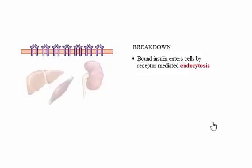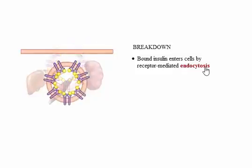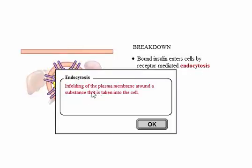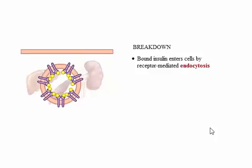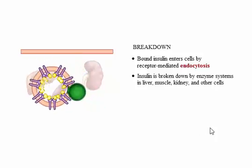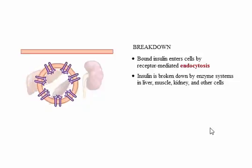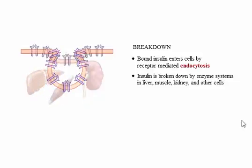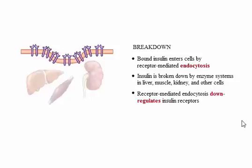Bound to its receptors, insulin enters cells by receptor-mediated endocytosis. Once inside, insulin is broken down by an enzyme system present in liver, muscle, kidney, and other tissues. Insulin receptors can be recycled to the plasma membrane. This occurrence down-regulates insulin receptors and could account for the decreased insulin sensitivity of some cells to chronically high insulin levels.